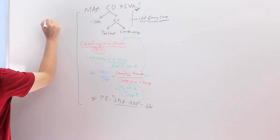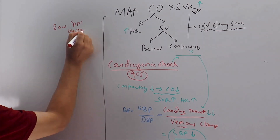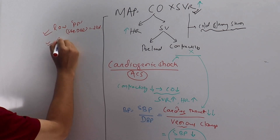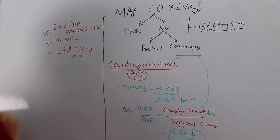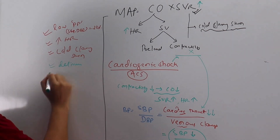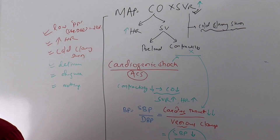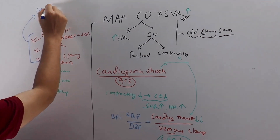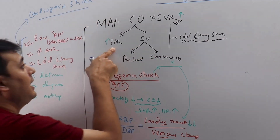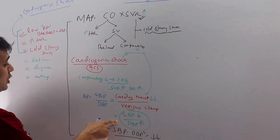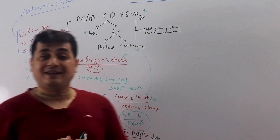At the bedside, check blood pressure, heart rate, and skin. If there is a low pulse pressure (SBP minus DBP decreased), high heart rate, and cold clammy skin — with possible delirium, oliguria, and mottling — this strongly suggests cardiogenic shock. In summary: low contractility leads to low SBP, high SVR leads to high DBP, producing a low pulse pressure with cold peripheries.